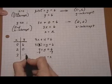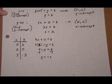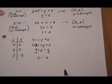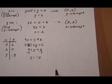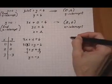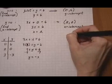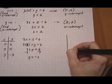So when x is 3, y is negative 3. Now we have three points and we can be pretty confident that if our three points make a straight line, then we've done our calculations correctly.